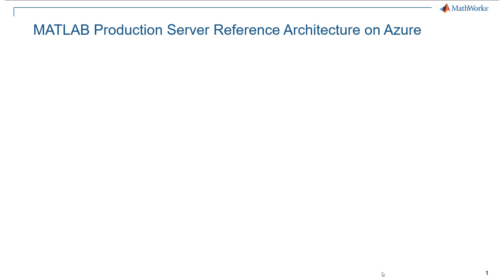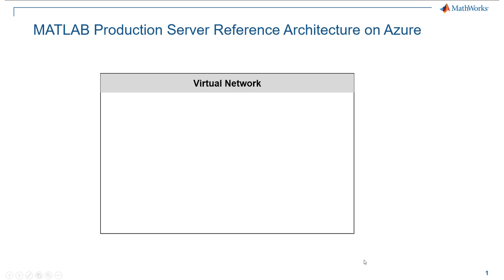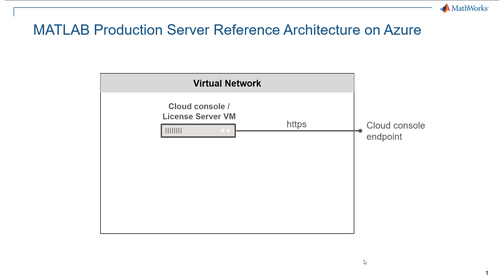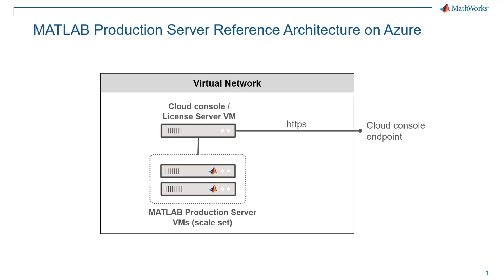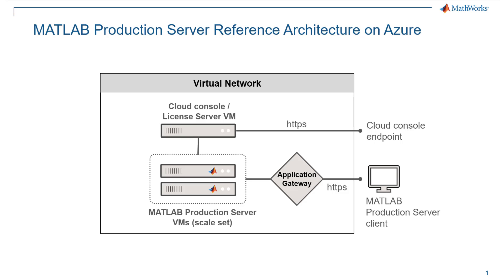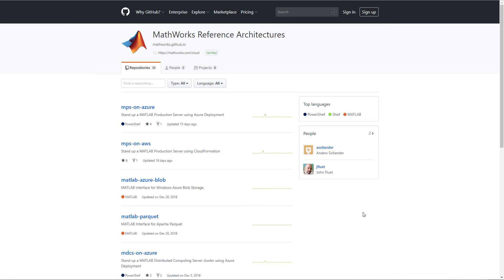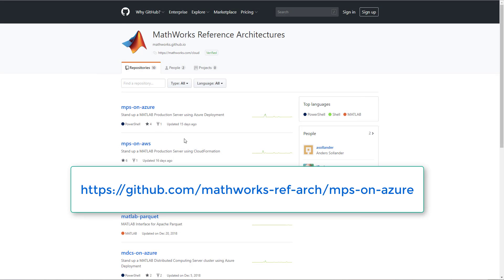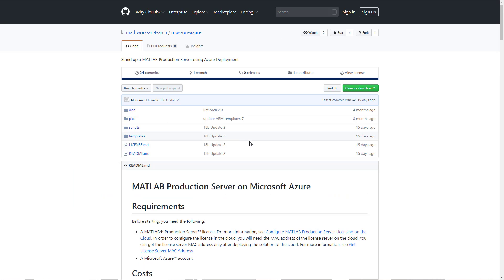This reference architecture contains all the components necessary to run MATLAB production server on Azure. The ARM, or Azure Resource Manager, template deploys a virtual network, a virtual machine that acts as the license server and cloud console server, by default two virtual machines that run MATLAB production server in a scale set — although this can be changed during configuration — an application gateway that acts as a load balancer, and a storage account for log files. We'll get started by navigating to the GitHub repository for the MATLAB production server reference architecture.